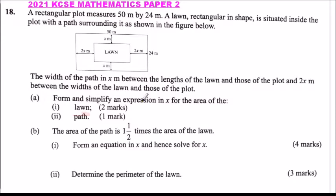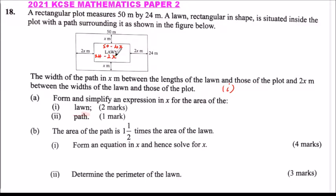Part A: form and simplify an expression in x for the area of the lawn (Roman numeral 1) and the path (Roman numeral 2). For the area of the lawn, the length of the lawn is 50 minus 4x, since there is 2x on each side along the length. The width of the lawn is 24 minus 2x, since there is x on each side along the width.